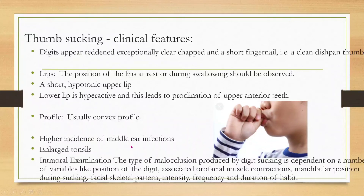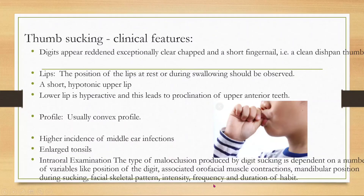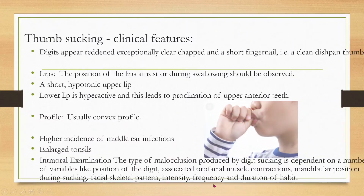Intraoral examination reveals that the type of malocclusion produced by digital sucking depends on variables including: position of the digit, associated orofacial muscle contractions, mandibular position during sucking, facial skeletal pattern, and the frequency, duration, and intensity of the habit.